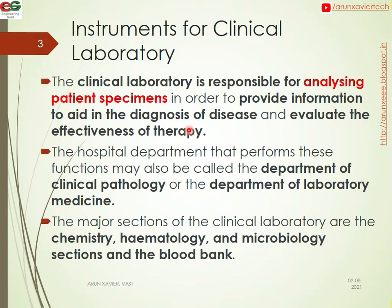The hospital departments that perform these functions are called the Department of Clinical Pathology and the Department of Laboratory Medicine. The major sections of the clinical laboratories are chemistry, hematology, microbiology, and the blood bank — all related to the department of clinical pathology.